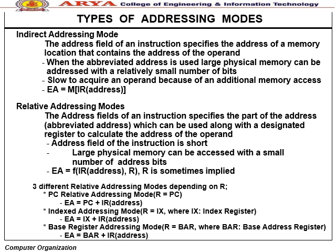Indirect addressing mode — the address field of an instruction specifies the address of a memory location that contains the actual operand address. Large physical memory can be addressed with a relatively small number of bits, but it is slow to acquire the operand due to an additional memory access. EA = M[IR].